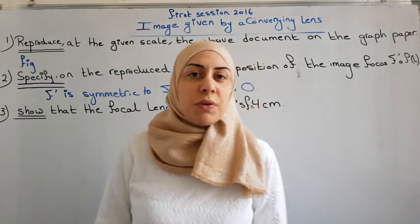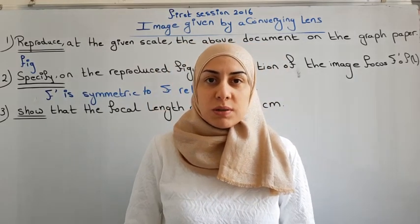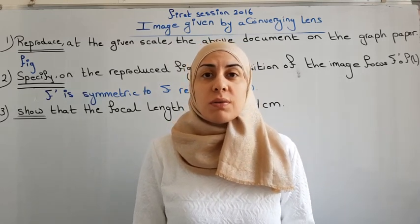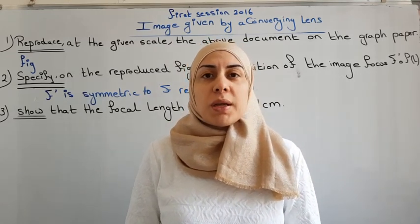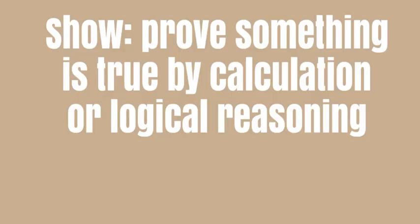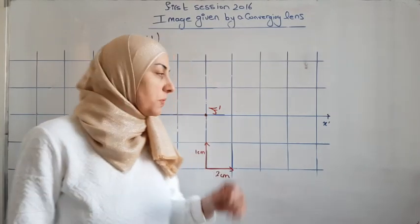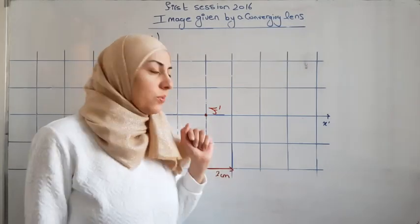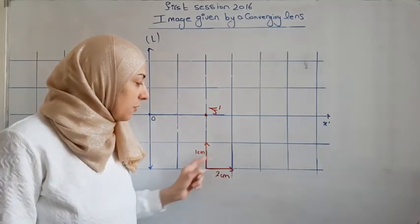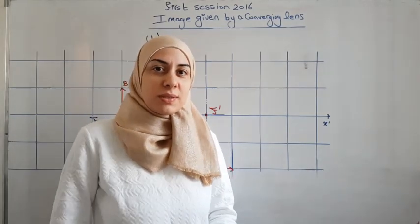We have to show that the focal length of the converging lens is f equal to four centimeters. Show means we have to prove something is true by calculation or logical reasoning. The focal length is the distance between O and F', which is two centimeters graphically. Multiplying by the scale factor: two times two equals four centimeters.